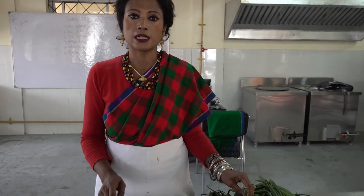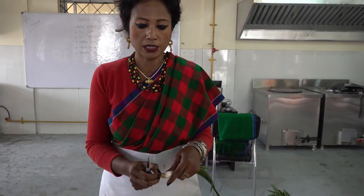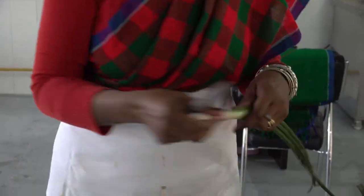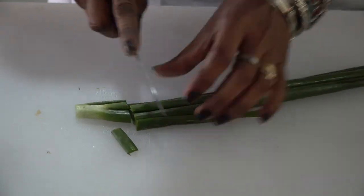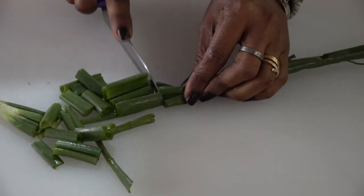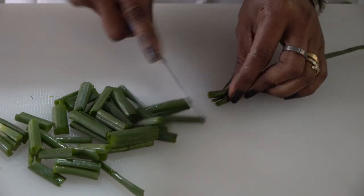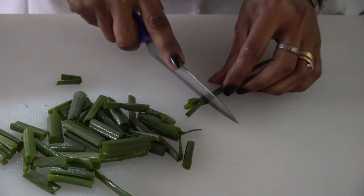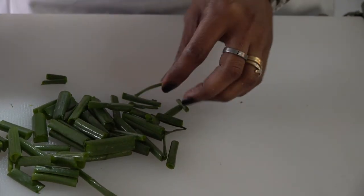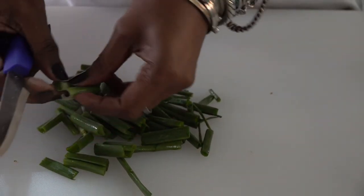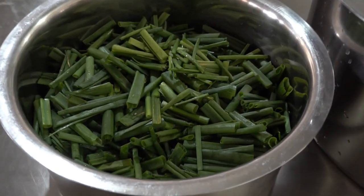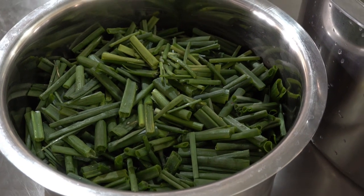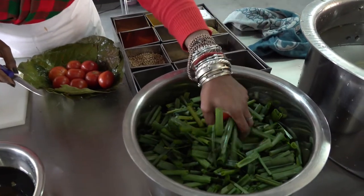Now we will prepare the first dish, ara rasi — that is a soup preparation. For that we will take the spring onion. We will cut and chop it. We don't need this part, we'll keep it aside. The rest we have to chop. For ara rasi, as you can see, we have cut the spring onion here.